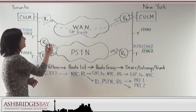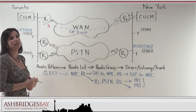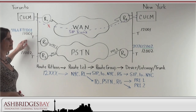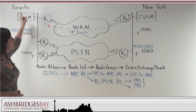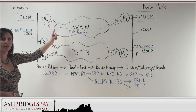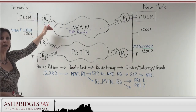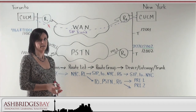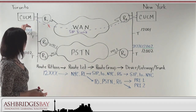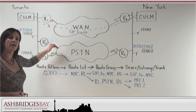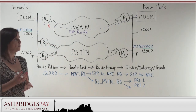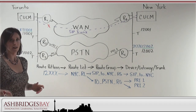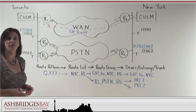So what happens when the WAN fails? I go to this phone and I call over to New York — 1-2-0-0-1. The call manager says use the SIP trunk, that's my first choice. So we send that call to the WAN, but the WAN is down. The call manager is going to go to our second choice. So we're going to send 1-2-0-0-1 out the PRI to the PSTN. But what happens when my call gets to the PSTN? The PSTN doesn't recognize 12001 as a phone number.